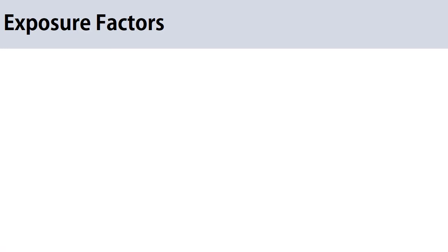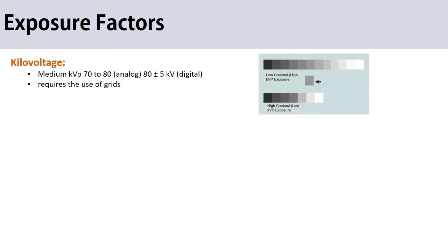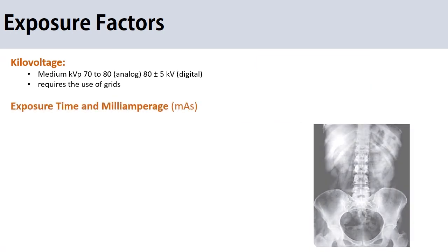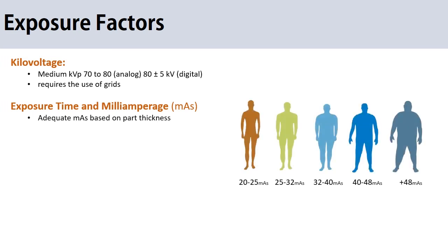For abdominal imaging we need a low contrast image to visualize the soft tissues. A kilovoltage of 70 to 80 kV for analog and 80 to 85 kV for digital imaging systems should be considered. Regarding milliampere-seconds, it depends on the patient's body habitus. For a normal adult patient, 25 to 32 mAs is usually used for KUB x-ray. It is better to increase mAs slightly to achieve higher contrast to visualize stones.